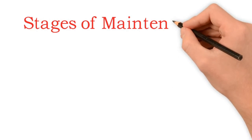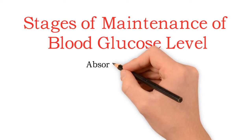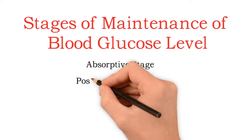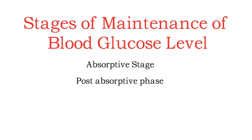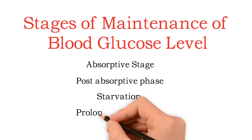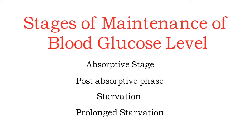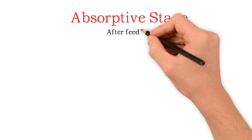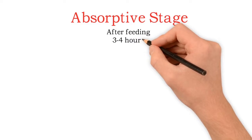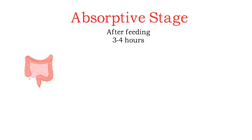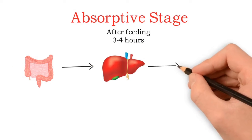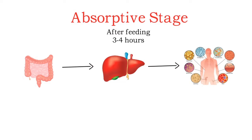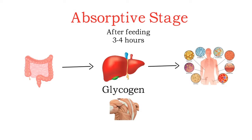There are four stages of maintenance of blood glucose level: the absorptive stage, the post-absorptive phase, starvation, and prolonged starvation. The absorptive stage starts after feeding and lasts up to 3 to 4 hours. Dietary glucose goes to the liver, which distributes it to most tissues for energy. Excess glucose is stored as glycogen in liver and muscle.